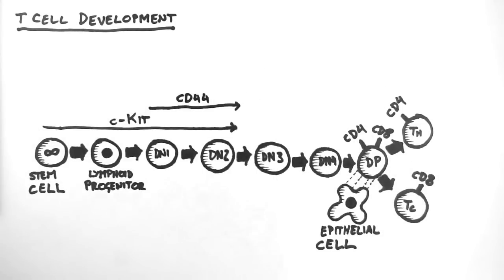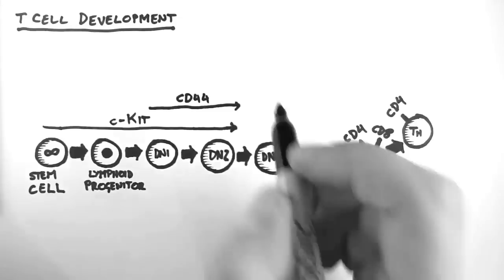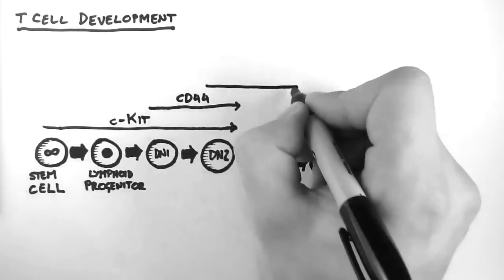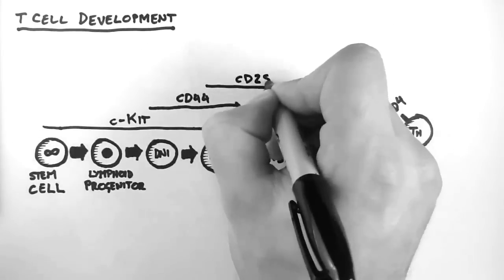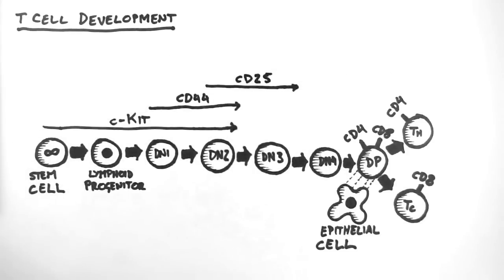And it is only expressed in these two stages. CD25 is then expressed at the double negative 2 stage and the double negative 3 stage. And neither the CD44 nor CD25 are expressed at the double negative 4 stage.